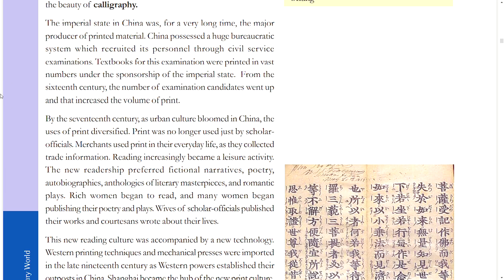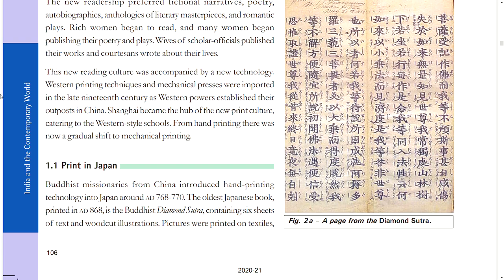Rich women began to read, and many women began publishing their poetry and plays. Wives of scholar-officials published their works, and courtesans wrote about their lives. This new reading culture was accompanied by new technology. Western printing techniques and mechanical processes became important in the late 19th century as Western powers established their outposts in China. Shanghai became the hub of the new print culture, and from hand printing there was a gradual shift to mechanical printing.